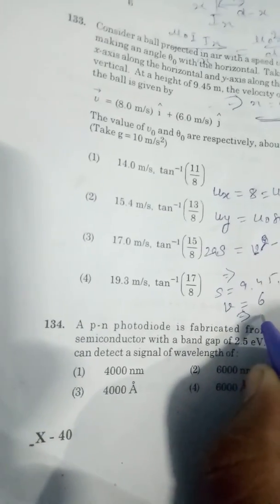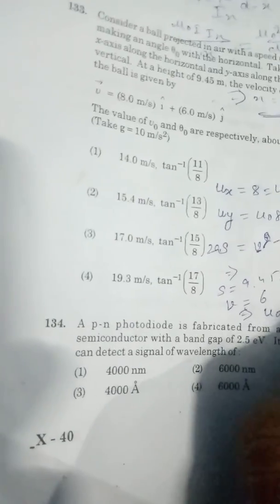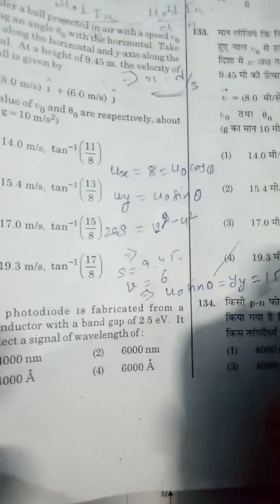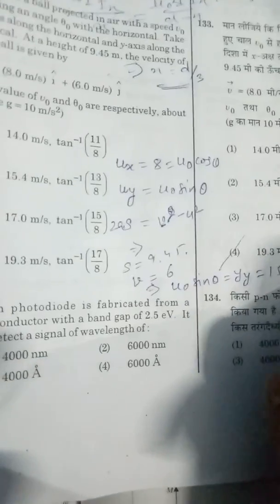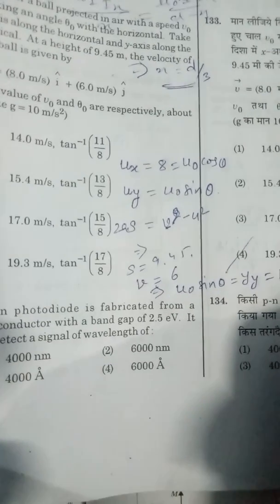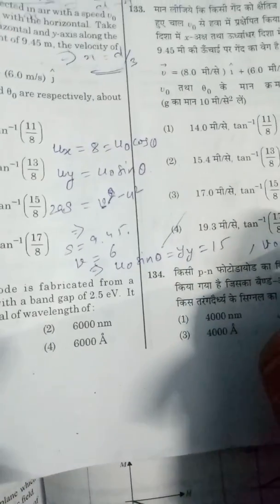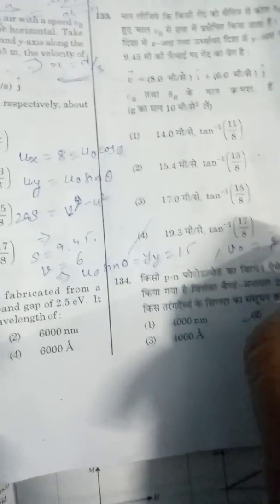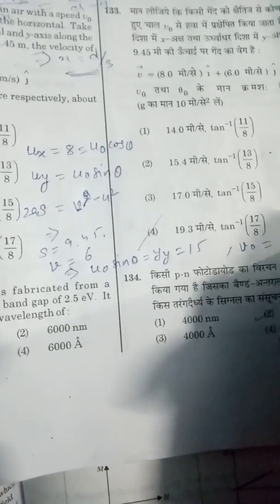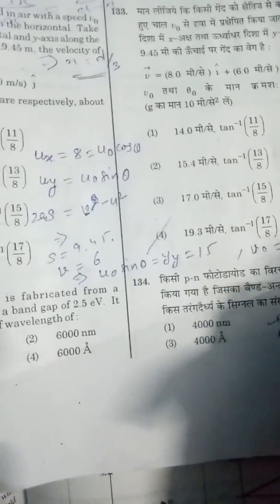So net velocity u_0 is equal to the square root of the sum of (u_0 sin theta)² and (u_0 cos theta)². On solving this we get the square root of 225 plus 64, which is 289 under the root, that is 17. So the correct option is option number 3.